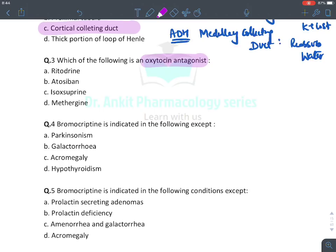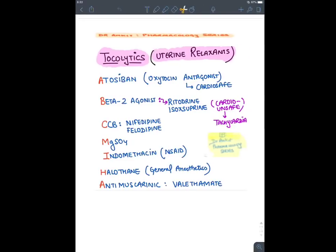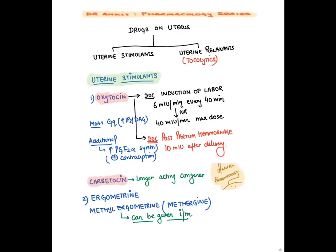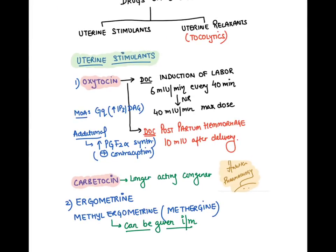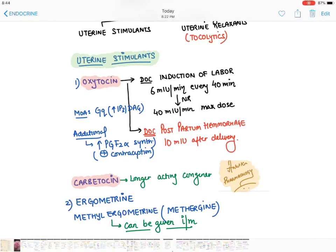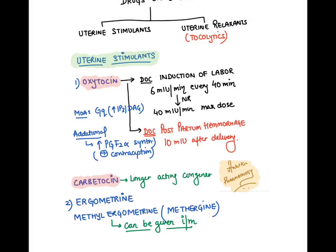Which of the following is an oxytocin antagonist? Oxytocin is a neurohormone secreted from the hypothalamus and stored in the posterior pituitary. It has its greatest effect on the uterus, causing uterine stimulation and contraction, making it a uterine stimulant. It is the drug of choice for induction of labor, augmentation of labor, and postpartum hemorrhage. It contracts the uterus through Gq receptors (GPCRs), increasing inositol triphosphate and DAG, and it also stimulates prostaglandin synthesis.